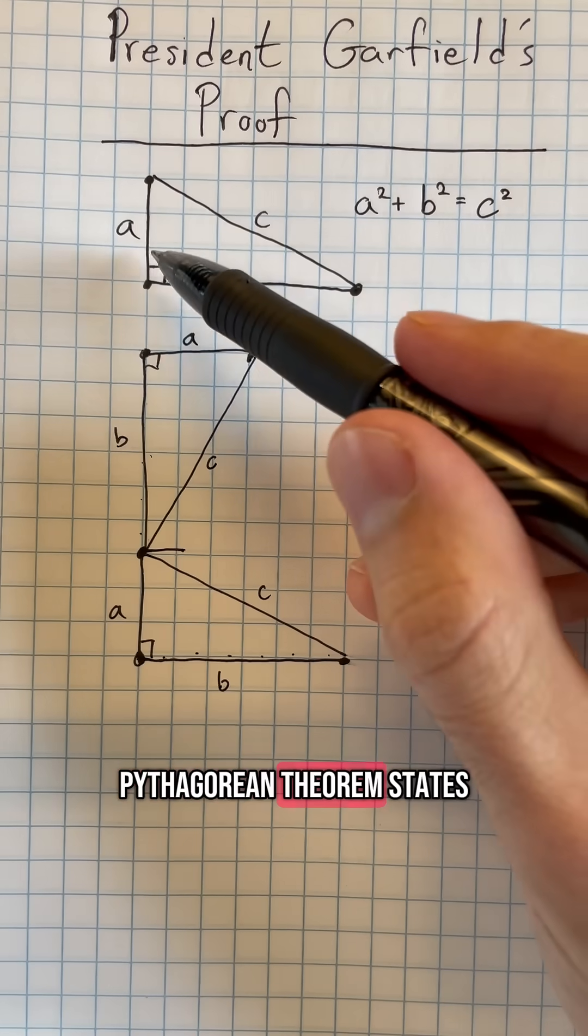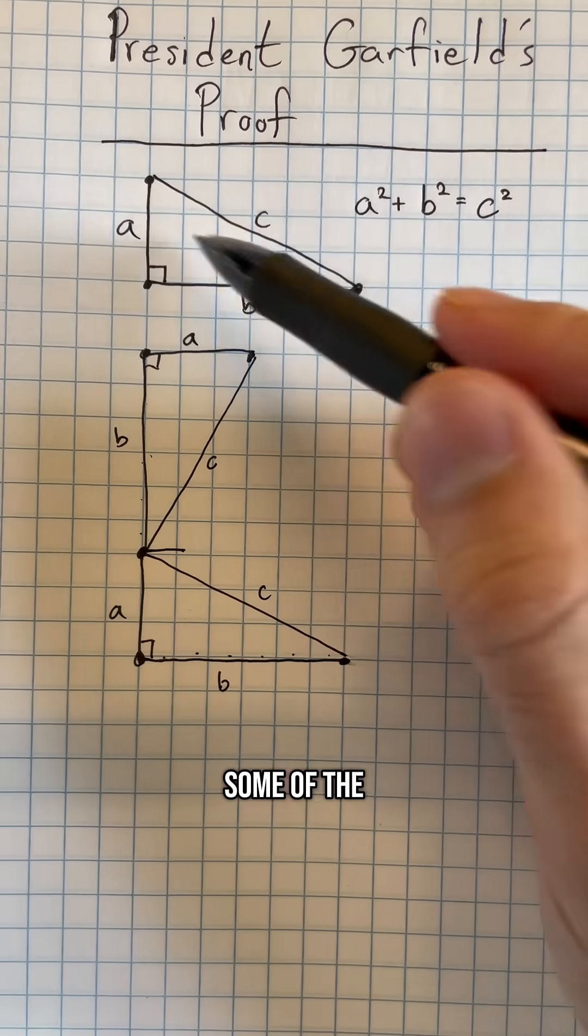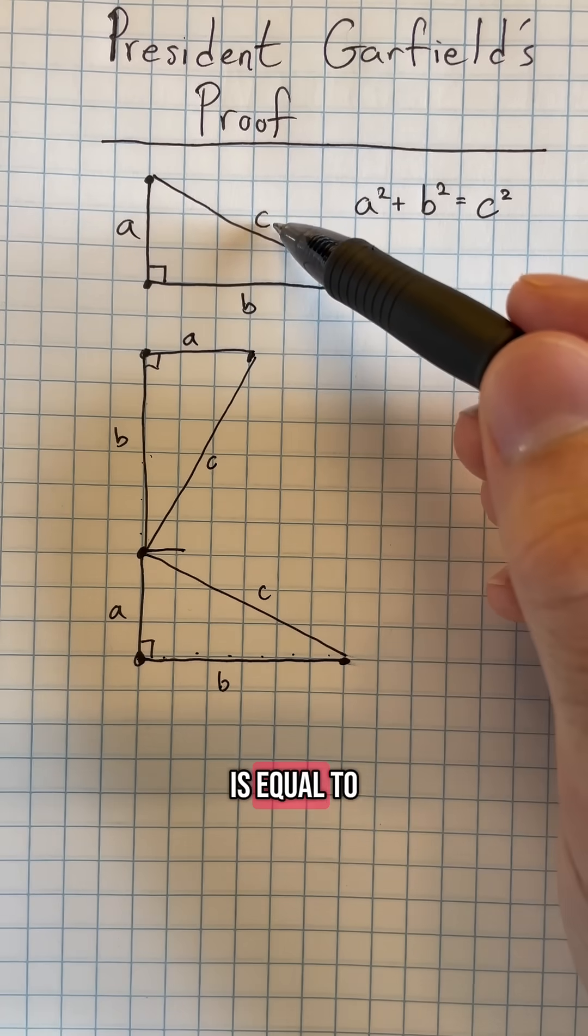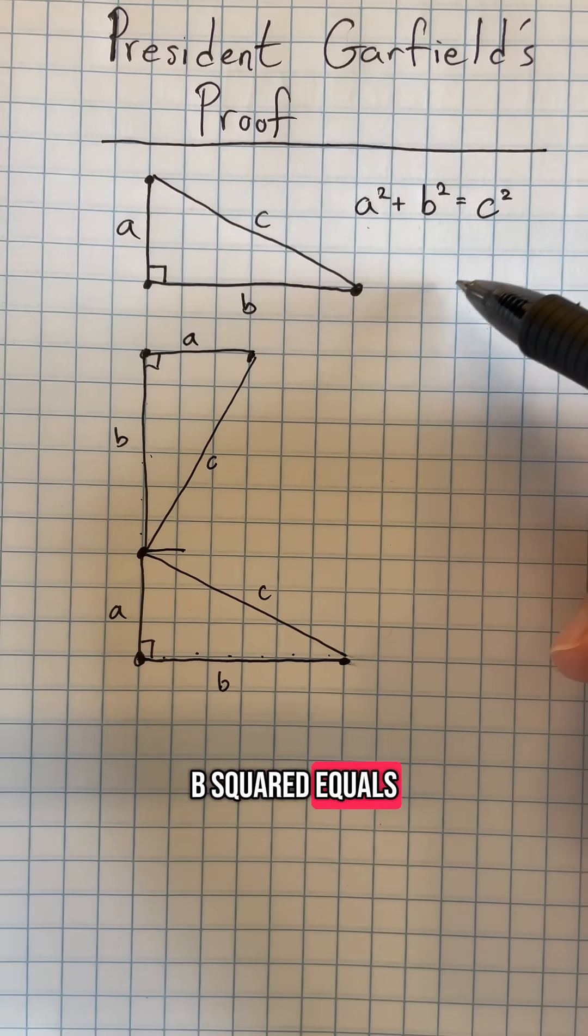Remember that the Pythagorean Theorem states that given a right triangle, the squares and sum of the shorter two sides is equal to the square of the third side, also notated as a² + b² = c².